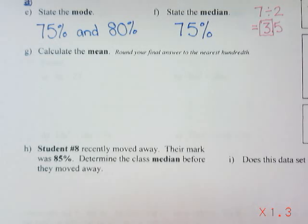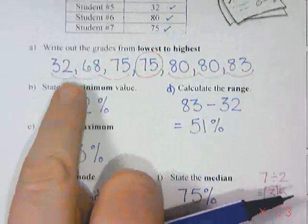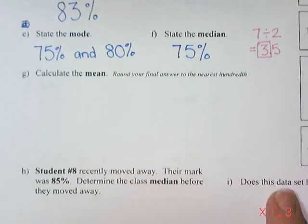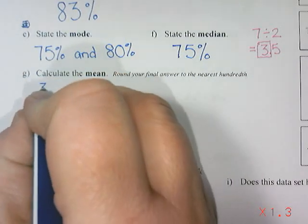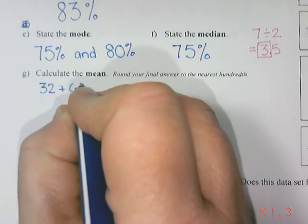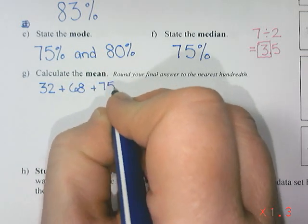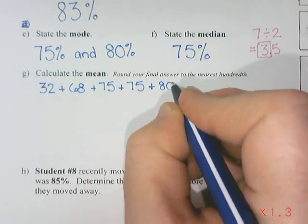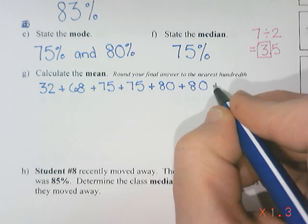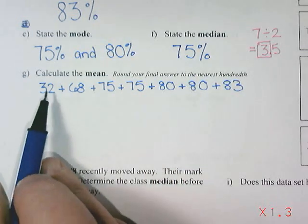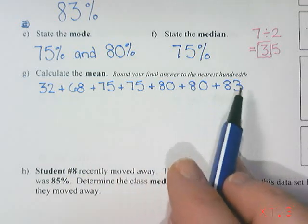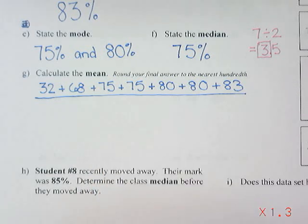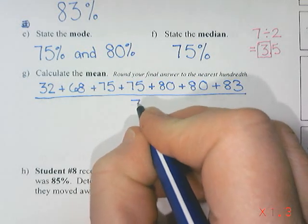My numbers are up here. I'm going to use my sorted list: 32 plus 68 plus 75 plus 75 plus 80 plus 80 plus 83. I always like to do a quick count — 1, 2, 3, 4, 5, 6, 7 — I have them all. This also helps because on the bottom I need to divide by the number of numbers, which is 7.